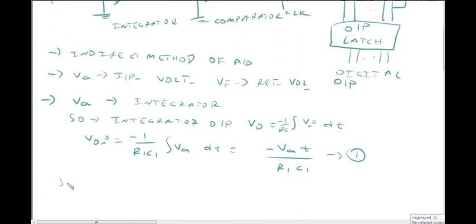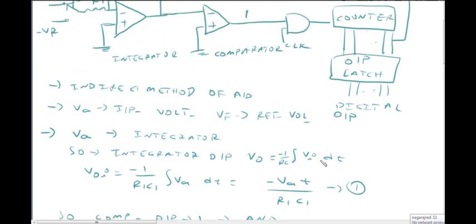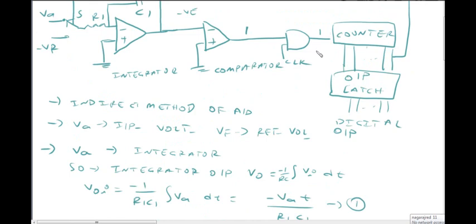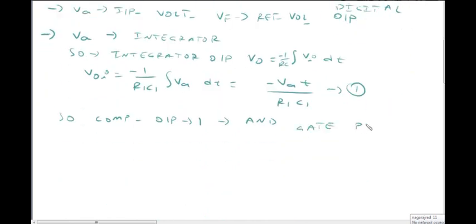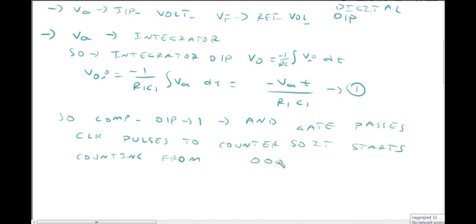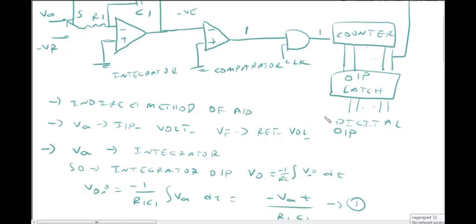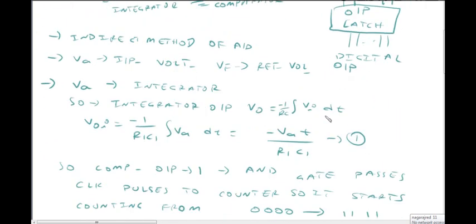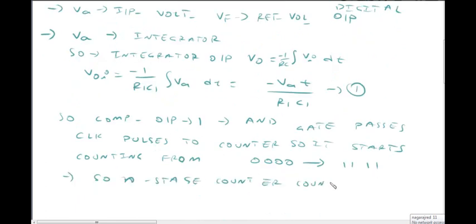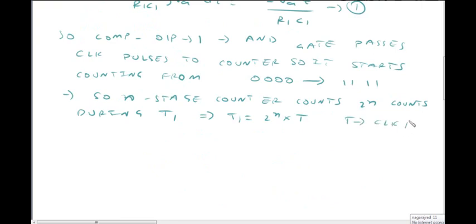Since the output is negative, the comparator's positive terminal is connected to ground (zero), and the negative terminal is below zero, so the comparator output becomes 1. With comparator output high, the AND gate input is 1, and the clock passes to the counter. The AND gate passes the clock pulses to the counter, and the counter counts the number of clock pulses. It counts from 0 to all-ones. When the n-stage counter completes, it counts 2 to the power of N clock pulses. So T1 equals 2^N times T, where T is the clock period.